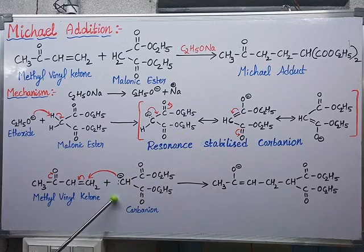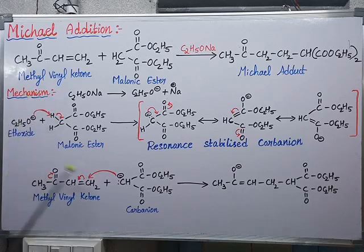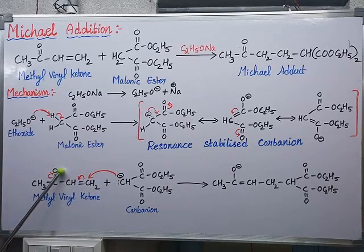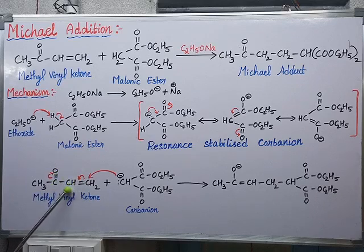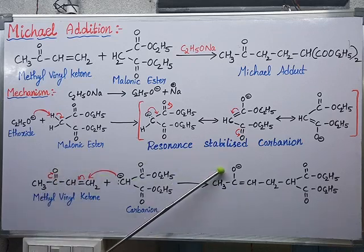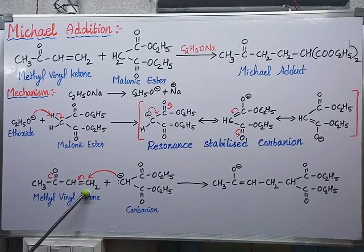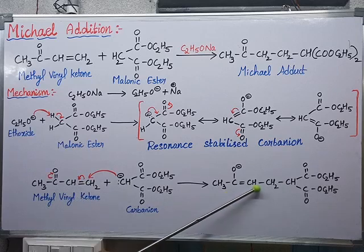Now this carbanion reacts with methyl vinyl ketone, the alpha-beta unsaturated compound. I am shifting the pi bond upward — since oxygen is more electronegative, it attracts the electron pair toward itself, giving oxygen a negative charge and carbon a positive charge. Shifting the second pi bond allows this negative and positive to form a double bond. The positively charged beta carbon and the negatively charged carbanion then form a new C–C bond (CH₂–CH bond), giving a combined intermediate.